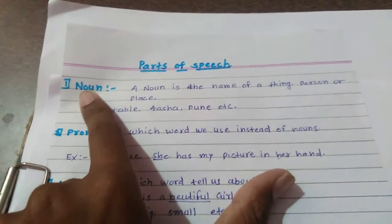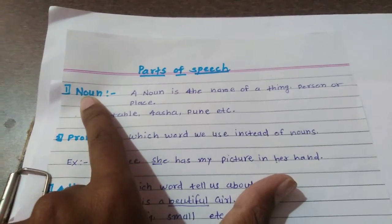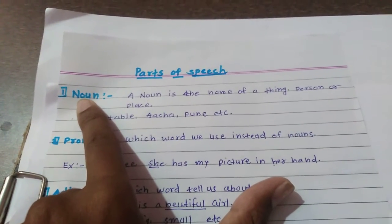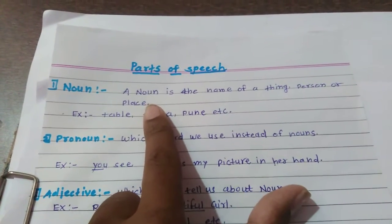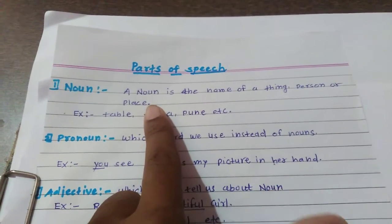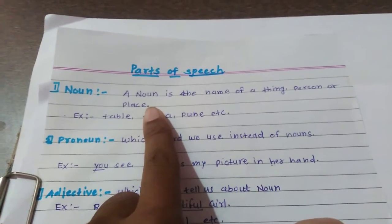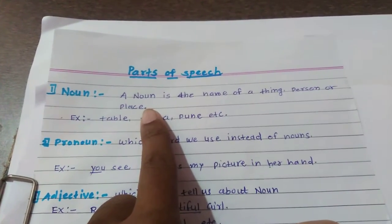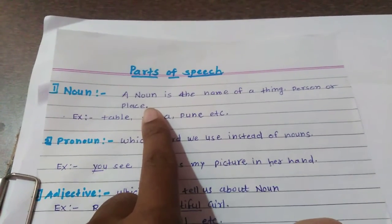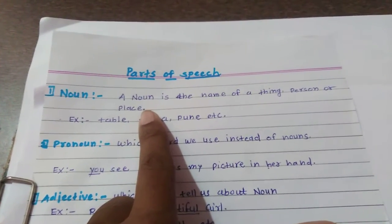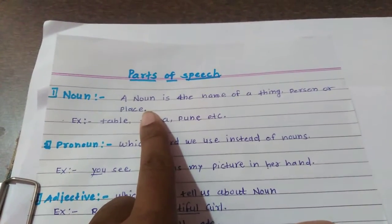Very first: noun. Noun means — it is a very very important thing for you — noun is the name of any person, place, or thing. It is called as the noun, whether that thing is a living thing or a non-living thing.